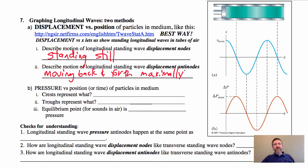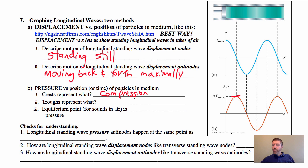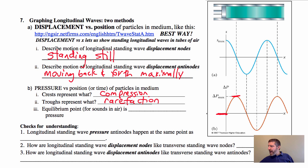There is however a different way to graph these longitudinal waves — graphing pressure versus position or pressure versus time. In this case, a crest represents a point of maximum pressure, which is simply a compression. And a trough represents a point of minimum pressure — a rarefaction. The equilibrium point represents atmospheric pressure. For sounds in air on Earth, that pressure is not zero — it is one atmosphere.